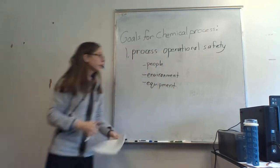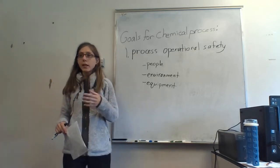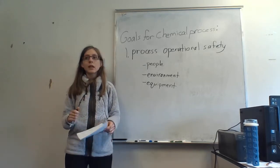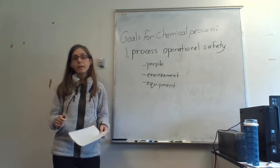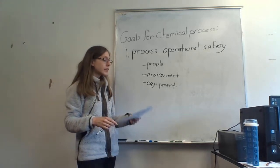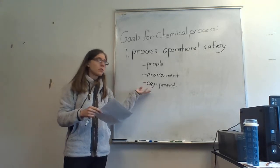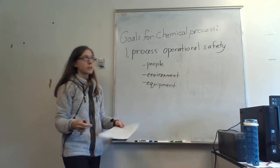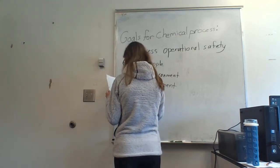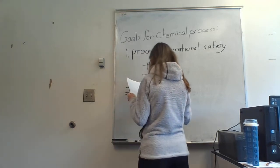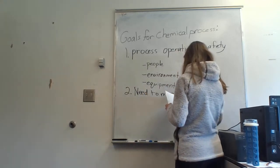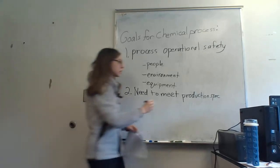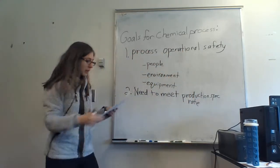You have to think about things like pressure — don't let the pressure get so high that it bursts. You also need to meet your production rate specification. Oftentimes you have to make a certain amount per unit time because there's a demand you need to meet.